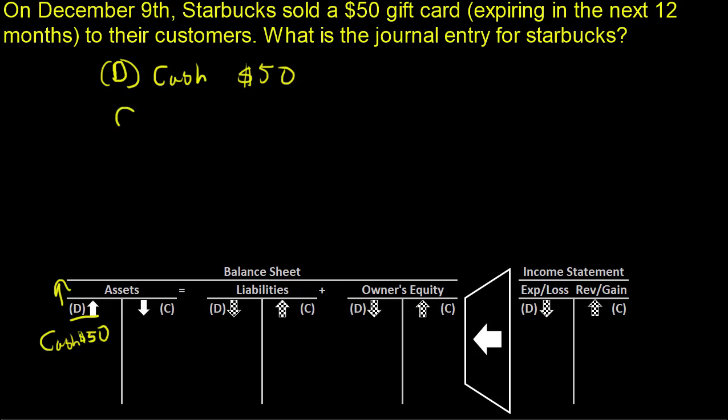Now, the credit is a little bit more nuanced. We might be tempted to make it revenue — it seems like it's revenue, we're selling something, right? But the reality is that gift card is not revenue. If you count it as revenue, it would seem like the job's already been done. Have you already done the job related to this? No. What we'd probably do is classify this as a liability account for something like revenue that we have to deliver.